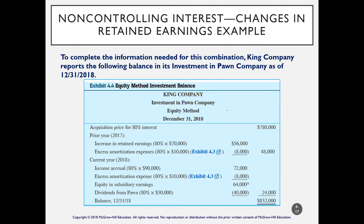Two years later, on December 31st, 2018, we look at the analysis of the investment in Pond Company. We have the acquisition price as of January 1st, 2017. Pond Company had income of $70,000 and dividends of $10,000 in 2017. Under the equity method, we apply King Company's ownership percentage to net income, dividends, and also amortization.